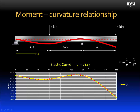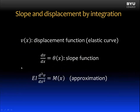The elastic curve is a function of x, and we'll use the symbol lowercase v to define it. We are able to find the elastic curve because of this relationship: the second derivative of the elastic curve equation is approximately equal to the moment divided by the flexural rigidity. To summarize, if we have an equation for the elastic curve — the displacement function — taking its derivative gives the slope of the elastic curve, and multiplying the second derivative by the flexural rigidity gives the internal moment in the beam.